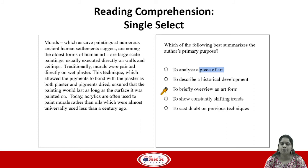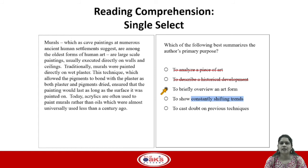Let's look at the remaining answer choices. Option A says to analyze a piece of art, which is not the case — the author is not analyzing a piece of art, so A can be eliminated. Option B says to describe a historical development, but this is not a historical development the author is talking about, so B can be eliminated. Option D says to show constantly shifting trends — there is a shift in trend mentioned, but the passage doesn't focus on constantly shifting trends, so D can be eliminated. Option E says to cast doubt on previous techniques, but the author is not trying to weaken any previous techniques, so E is eliminated, confirming C as our answer.